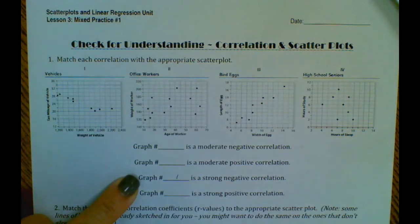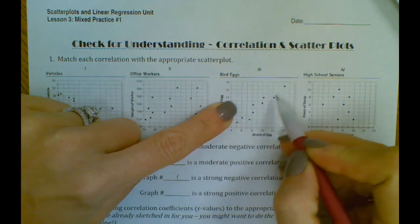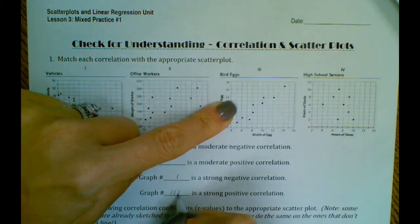Our next strongest, and this is positive, this is going up, is the bird eggs here, graph three. So strong positive would be graph three.